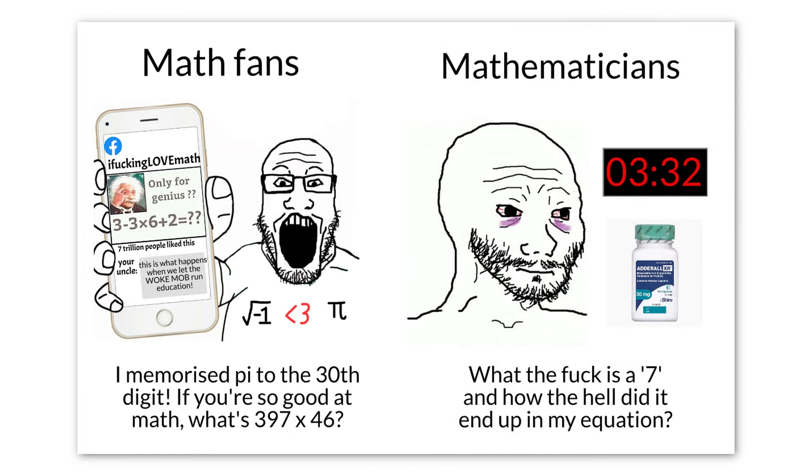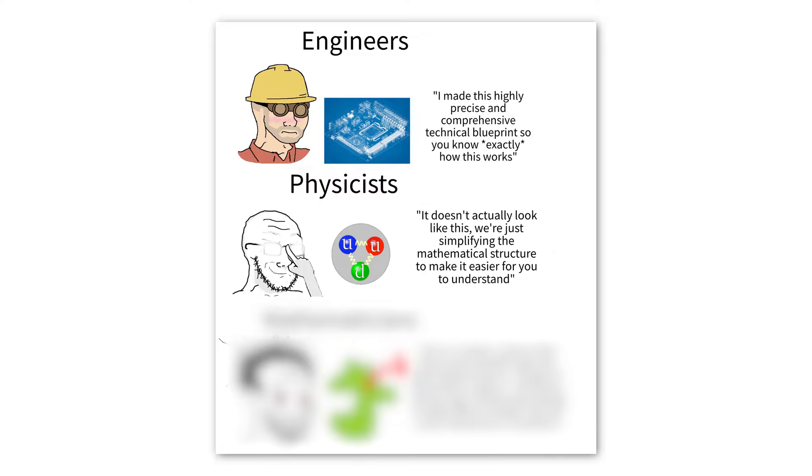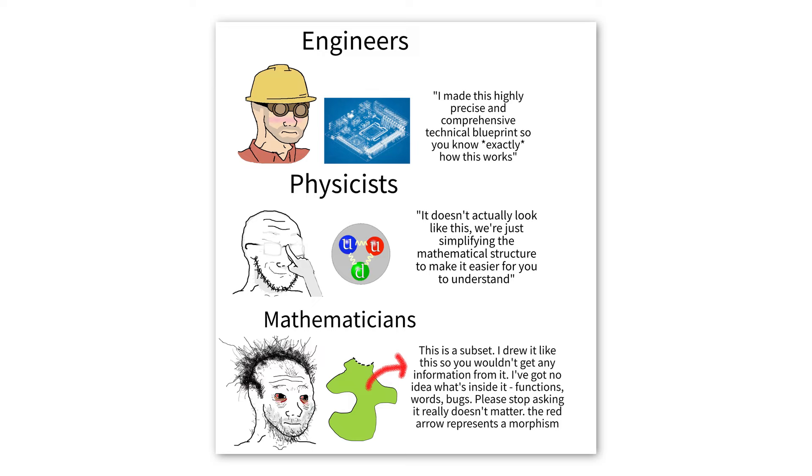Mathematicians. What the fuck is a 7th and how the hell did it end up in my equation? Engineers. I made this highly precise and comprehensive technical blueprint. So you know exactly how this works. Physicists. It does not actually look like this. We are just simplifying the mathematical structure to make it easier for you to understand. Mathematicians. This is a subset. I drew it like this so you would not get any information from it. I have got no idea what is inside it. Functions. Words. Bugs. Please stop asking. It really does not matter. The red arrow represents a morphism.